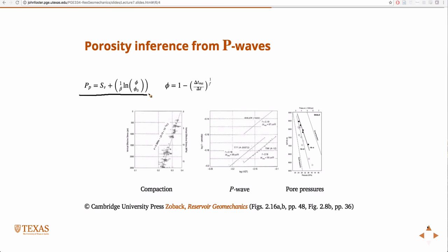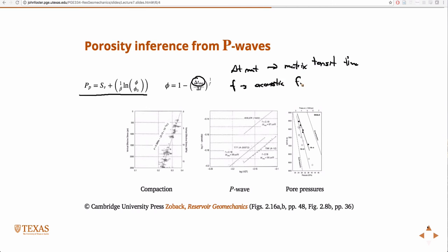We can get the actual porosity from a P-wave. So the steps here: you go to the lab and do your compaction experiments to find beta. Then you do your P-wave work, and you get the delta T matrix — the matrix transit time — and F, the acoustic formation factor. You get those from your P-waves, and that's what this plot is showing.